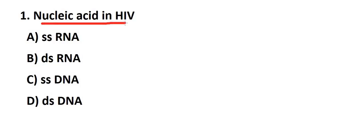Next question: what is the nucleic acid in HIV? HIV is the human immunodeficiency virus. The nucleic acid of HIV is in the form of single-stranded RNA. HIV has two copies of single-stranded RNA. So option A is the right answer.